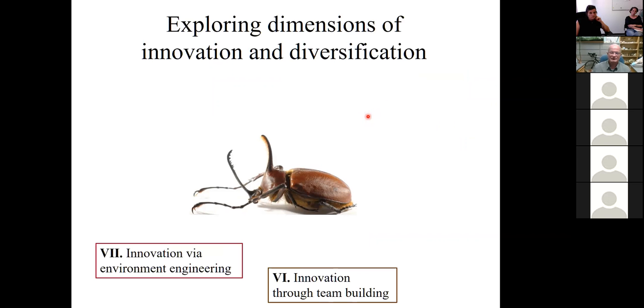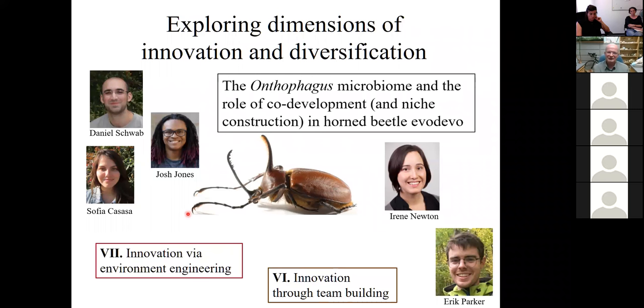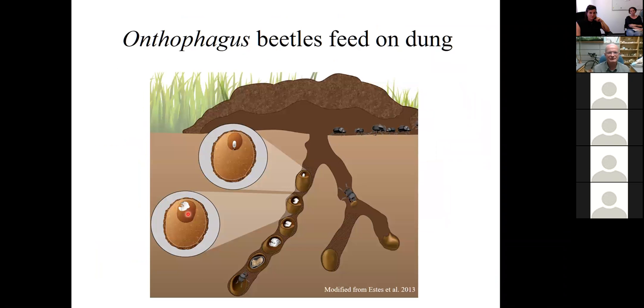What I would like to end with is this part here. I want to explore how we study innovation through team building and innovation via environment engineering. This is work where I'm part of a larger team involving my microbiology colleague Irene Newton, graduate students Eric Parker, former grad students Daniel Schwab and Sophia Casasa, as well as current graduate student Josh Jones. Here I want to introduce you to the Onthophagus microbiome and the role of co-development and niche construction in horned beetle evo-devo. Let me step back and reintroduce my study organisms from a different perspective.